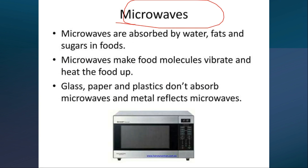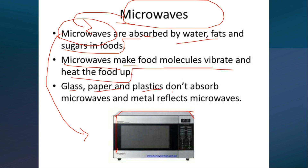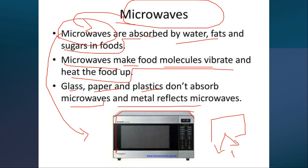Microwaves are absorbed by water, fats, and sugars in foods. This property is used in microwave ovens, which make food molecules vibrate and heat the food. Glass, paper, and plastics don't absorb microwaves, and metal reflects microwaves. That's why there are microwave-safe containers made of glass, paper, or plastic — only the food molecules are heated, not the container.